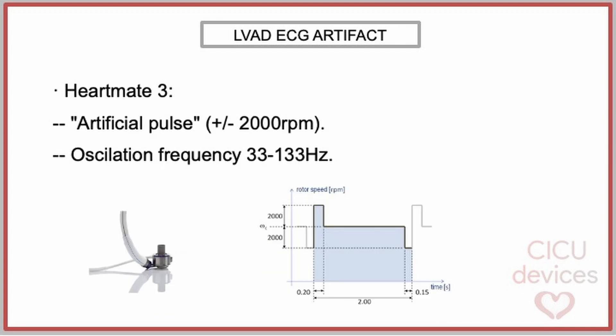In the case of the HeartMate 3 device, its operation includes a rapid decrease and increase in the pump's rotational speed every 2 seconds, generating an artificial pulse. This change in revolutions per minute can affect the artifact observed in the electrocardiogram, because at certain points in the cycle the oscillation frequency can be as low as 33 Hz.